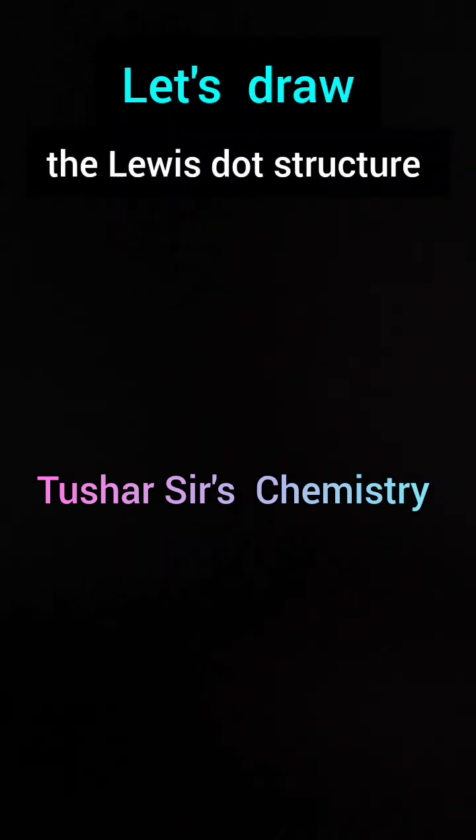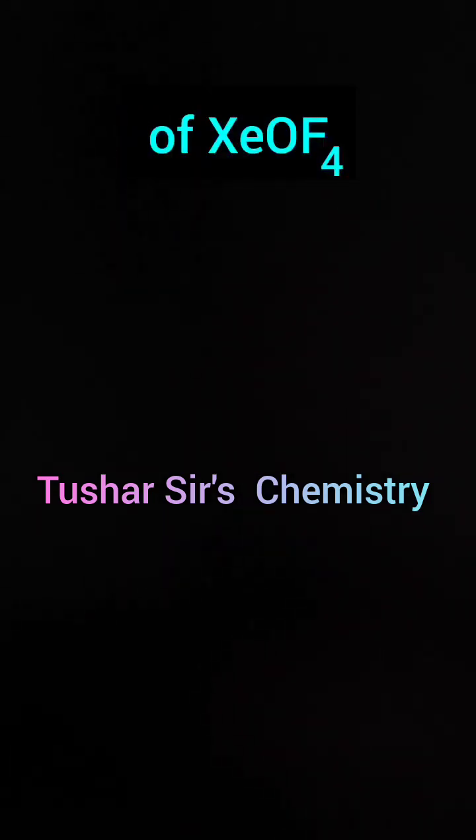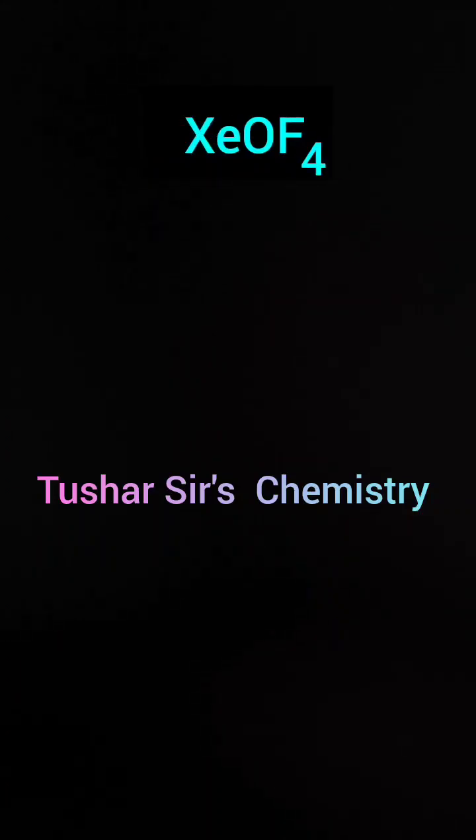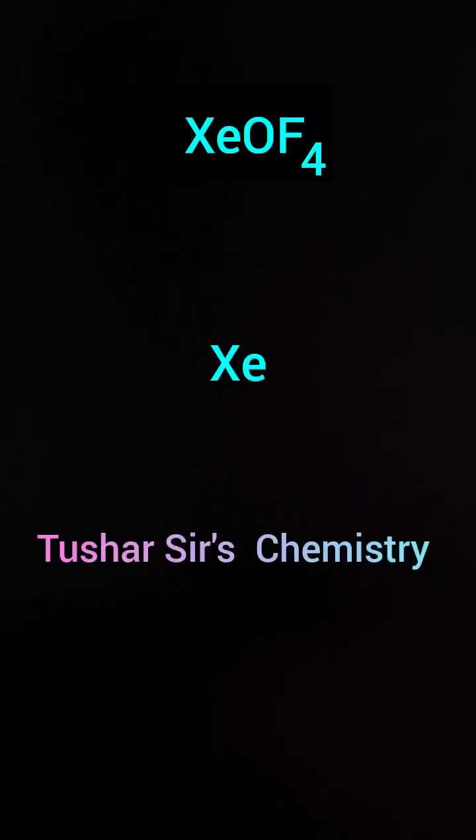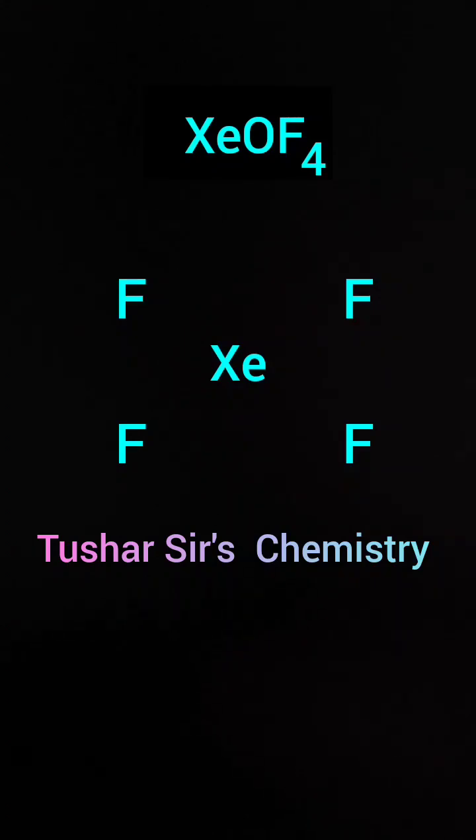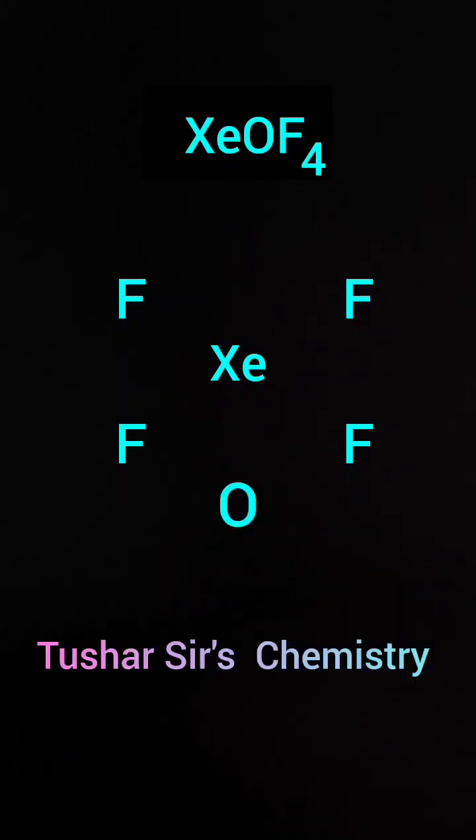Let us draw the Lewis dot structure of XeOF4. Here Xe is present in the center. Four fluorine atoms are present around xenon and one oxygen is at the top or bottom, that you can decide.